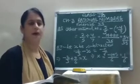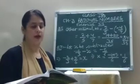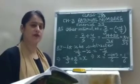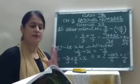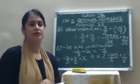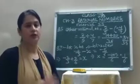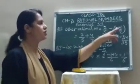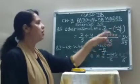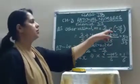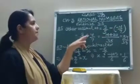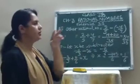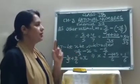Question number 5: the sum of two rational numbers is 2 upon 5; one of them is minus 4 upon 7 — find the other. The sum is given, so to find the other rational number you subtract: just like if the sum of two numbers is 5 and one is 3, you do 5 minus 3. So here: 2 upon 5 minus bracket minus 4 upon 7. Open the bracket: minus minus becomes plus. So 2 upon 5 plus 4 upon 7. The LCM of 5 and 7 is 35: 14 plus 20 gives 34 upon 35.